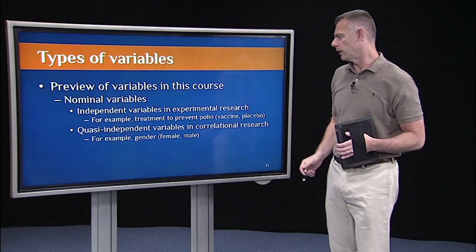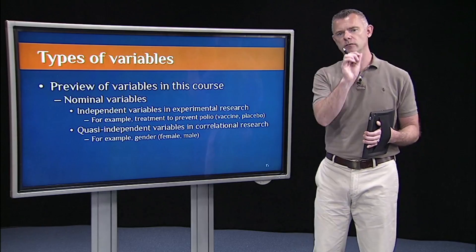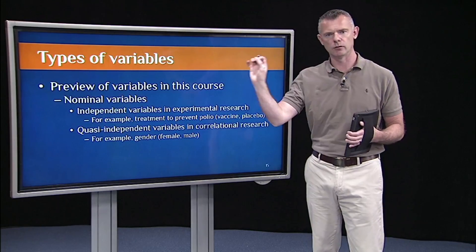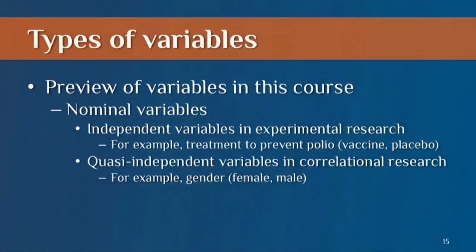The quasi-independent variables are also an example. So the sports-related concussion. There was concussion, no concussion. Those are just nominal groups. Another good or popular quasi-independent variable is gender, female, male.